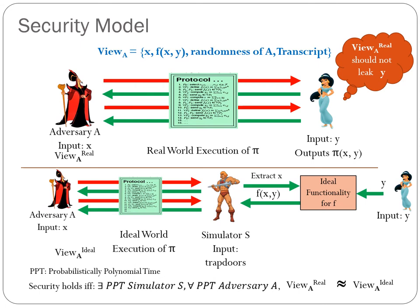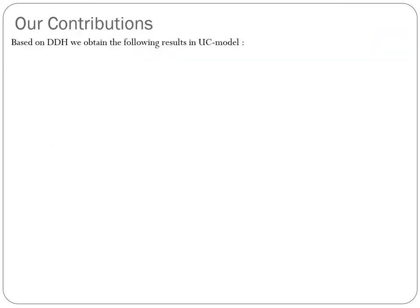Our work focuses on improving the efficiency of adaptively secure commitment and oblivious transfer. Our protocols are proven secure in the universal composability model so that the primitives can be seamlessly composed in larger protocols. All our protocols are based on the decisional Diffie-Hellman assumption. Based on DDH, we obtain the following results in the UC model.